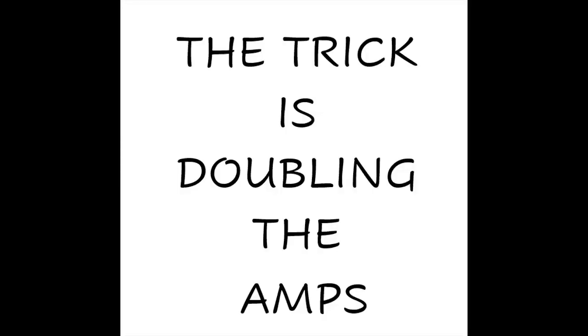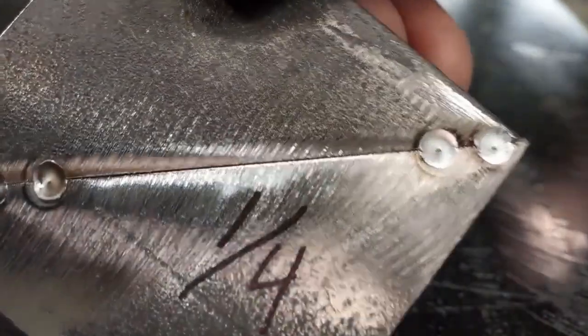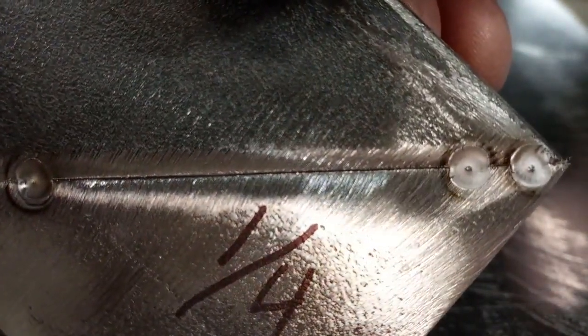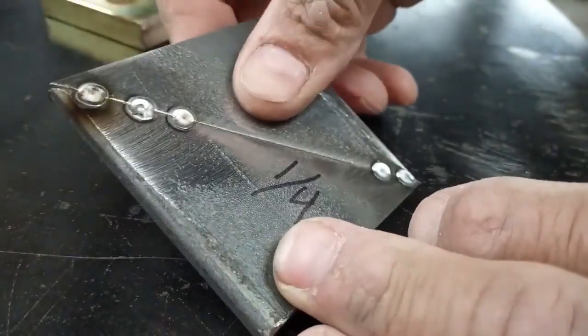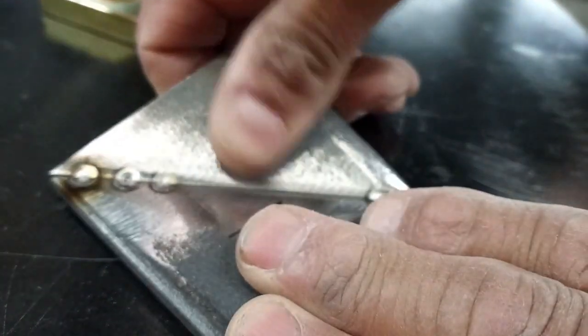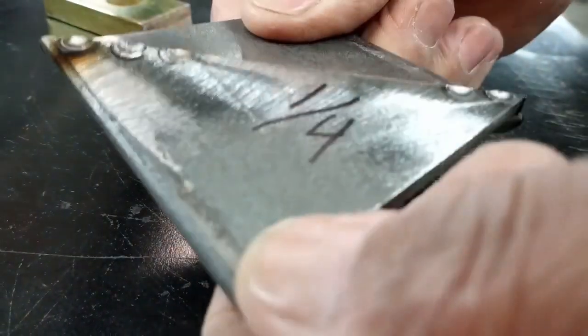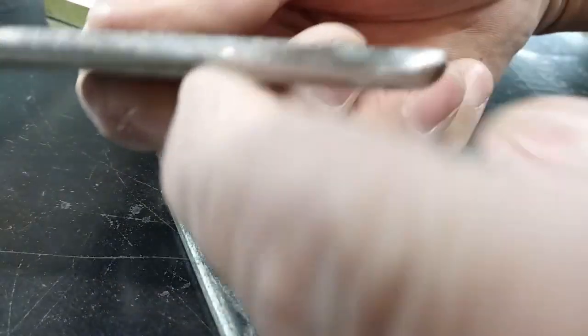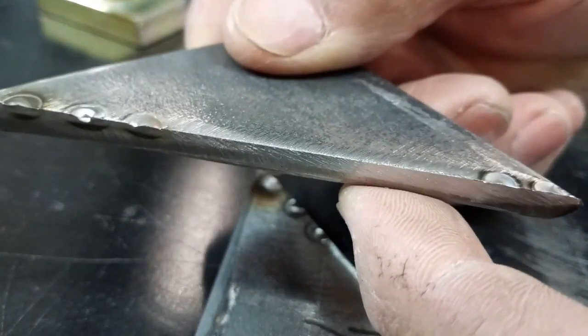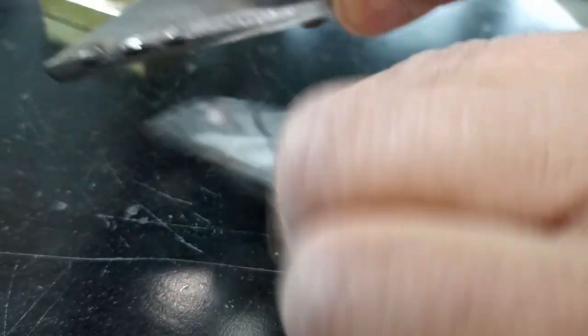Now the second key is you double the number of amperage that you're using on that given thickness of metal. Now we all know that the rule of thumb is one amp per thousandth thickness of material. Well, you just double it with this method.